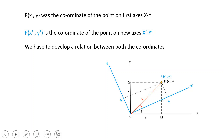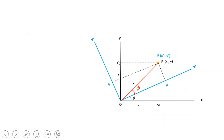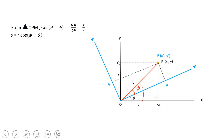Let OM be distance x, OQ be distance y, OR be distance x-dash, and OS be distance y-dash. From triangle OPM, which is a right triangle, cos(theta + phi) equals adjacent side OM divided by hypotenuse OP. Since OM = x and OP = R, we get x = R·cos(theta + phi). This is equation 1.